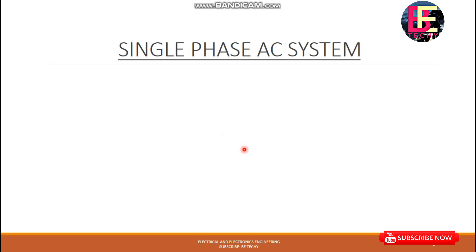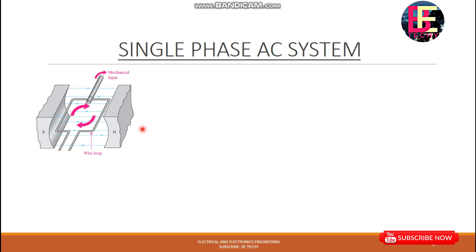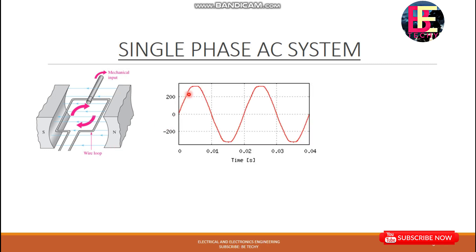What is the single-phase AC system? This is not a single-loop generator — this is a very simple winding with two terminals. One terminal produces the voltage — the single-phase voltage. This is the single-phase AC voltage. You can see that the three-phase voltage is produced by three separate phases, but the single-phase system has just one phase.